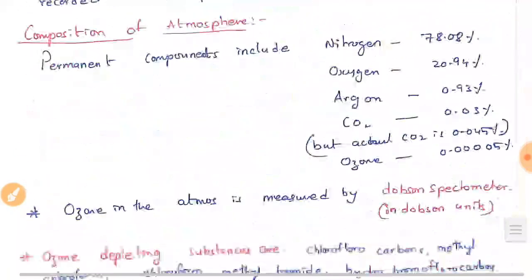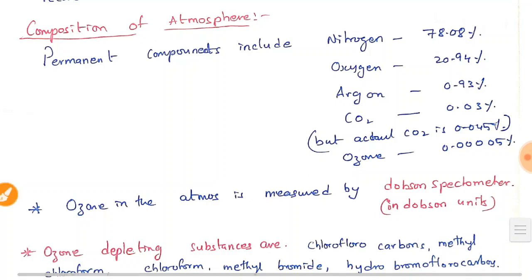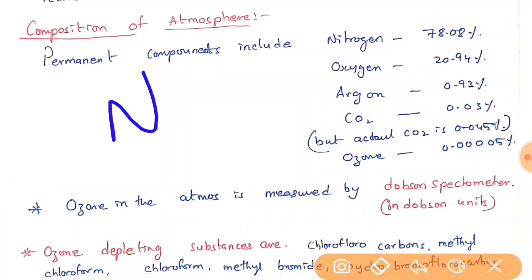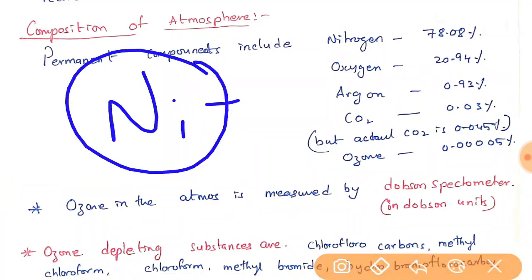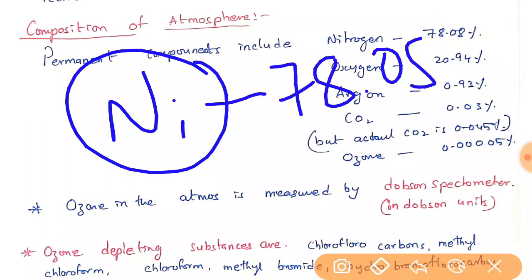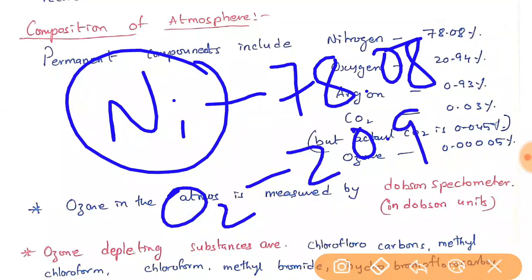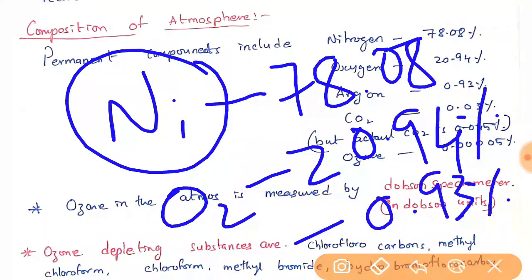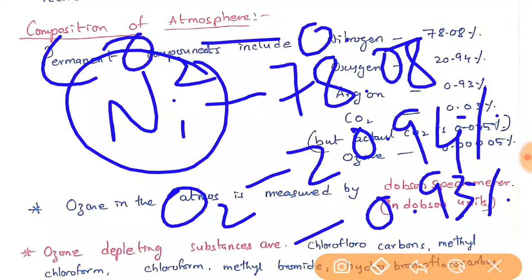The composition of the atmosphere: nitrogen constitutes 78%, oxygen is second at 20.94%, next comes argon (an inert gas) at 0.93%, then CO₂ — the global warming gas — at 0.03%, and ozone at 0.0005%.